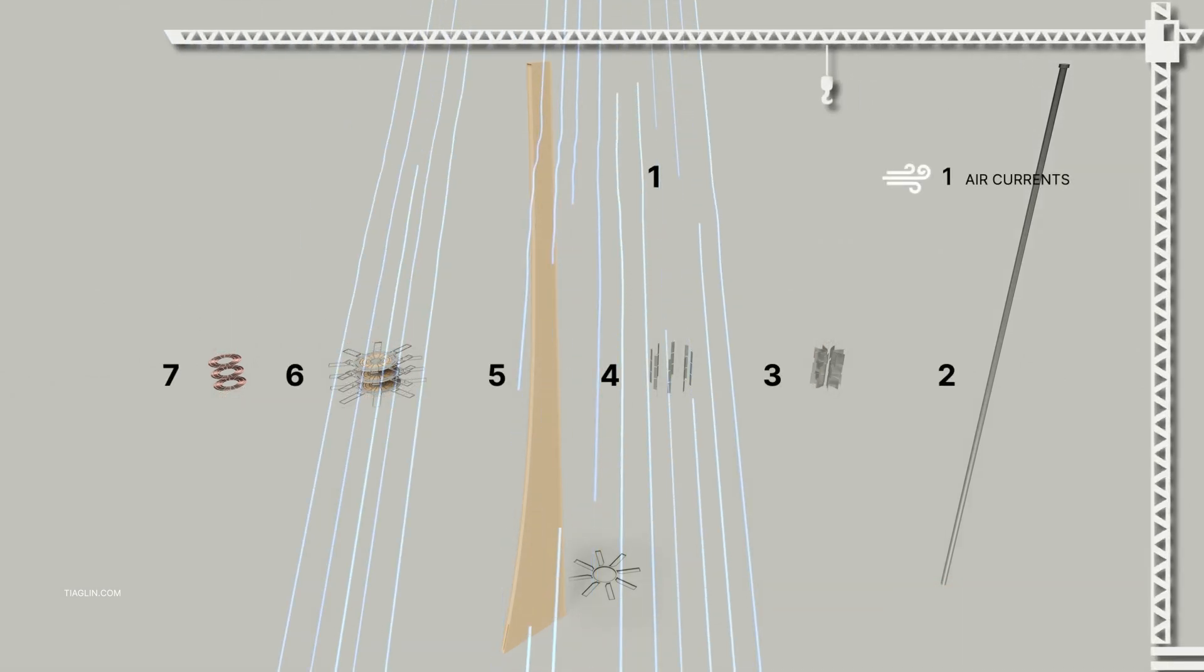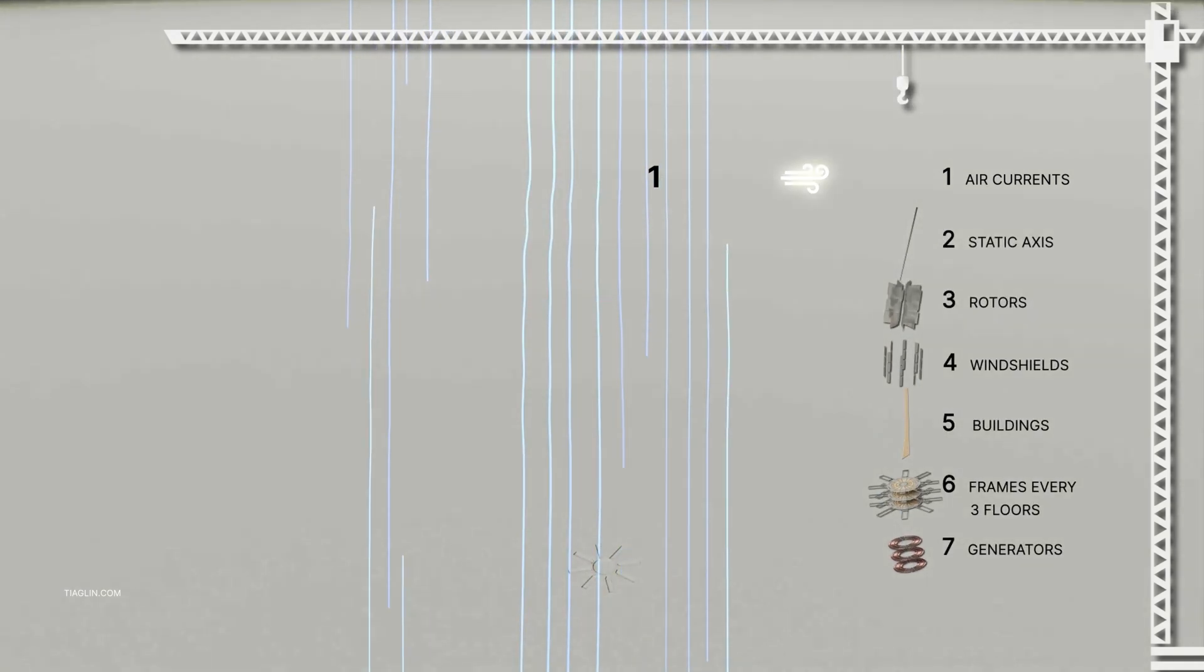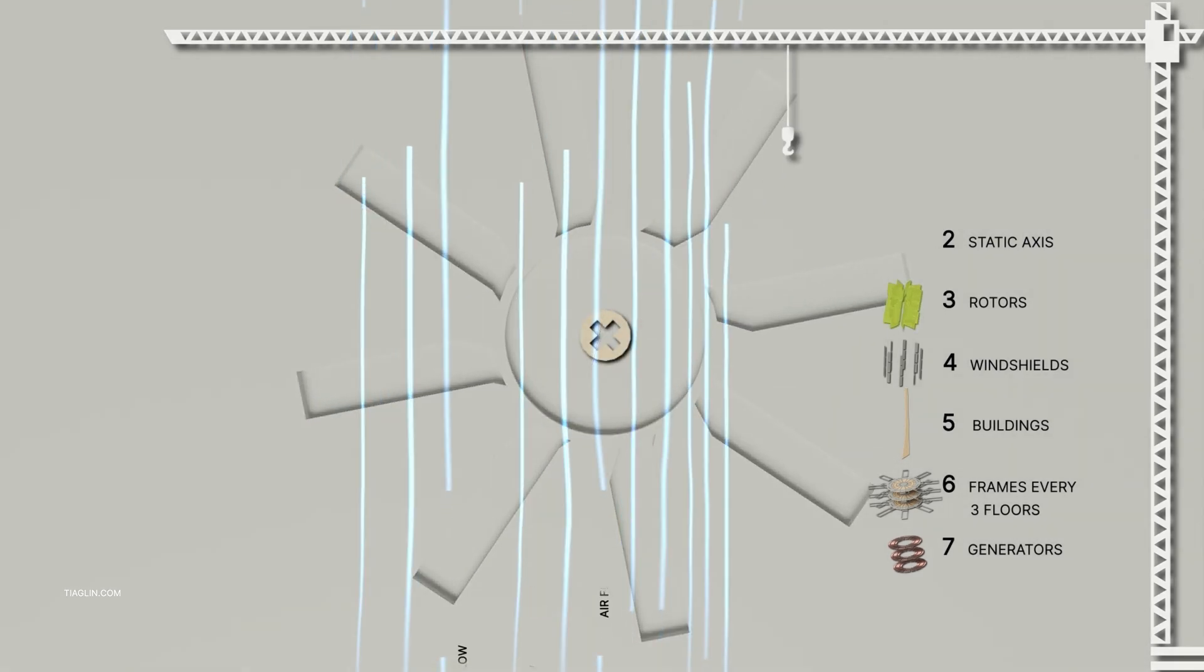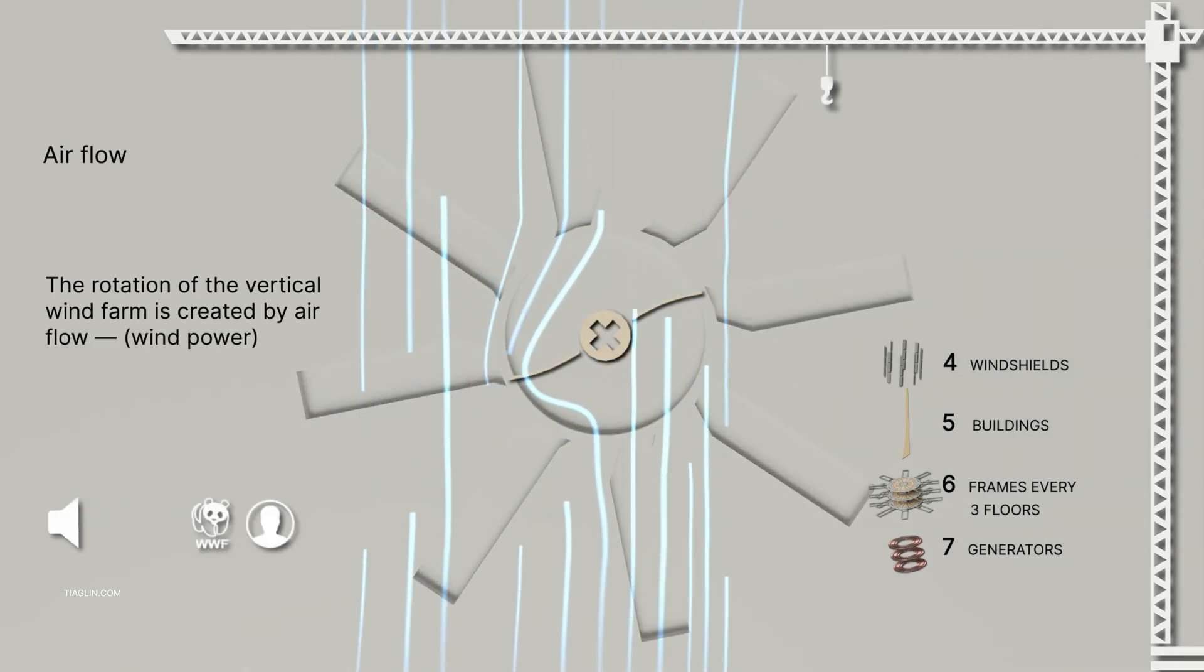One, air currents; two, static axis; three, rotors; four, aerodynamic shields; five, buildings; six, frame every three floors; seven, generators.